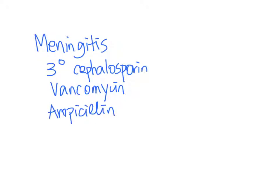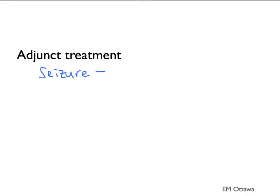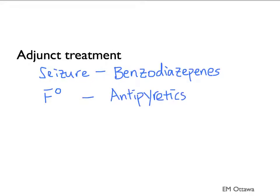It's best to check with your staff about the specific antibiotic you want to use. For encephalitis, the choice of antiviral is usually acyclovir. There are also other adjunct treatments. For seizures, we often use benzodiazepines. For fever control, antipyretics. For patients with suspected bacterial meningitis, sometimes dexamethasone is given with the first dose of antibiotics. It is best to discuss with your staff.